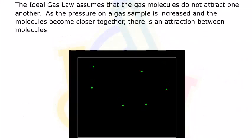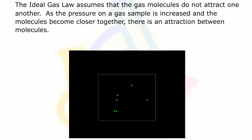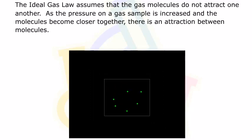The Ideal Gas Law assumes that the gas molecules do not attract one another. As the pressure on a gas sample is increased and the molecules become closer together, there is an attraction between molecules.